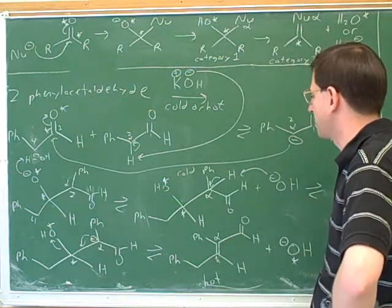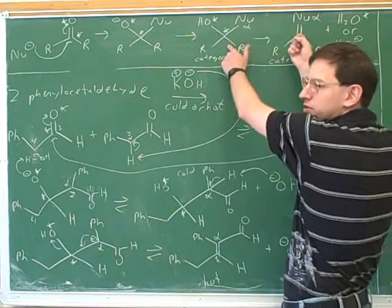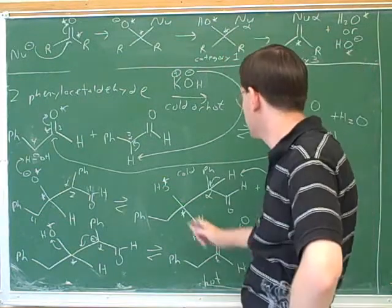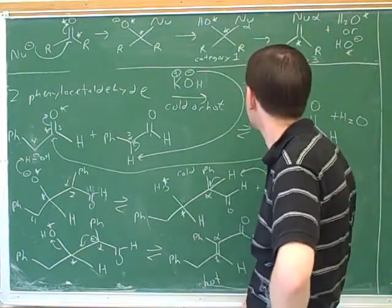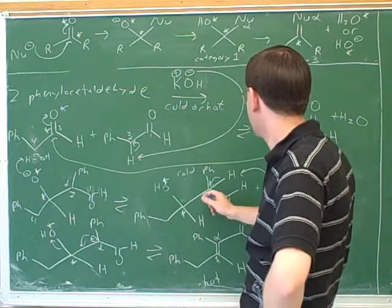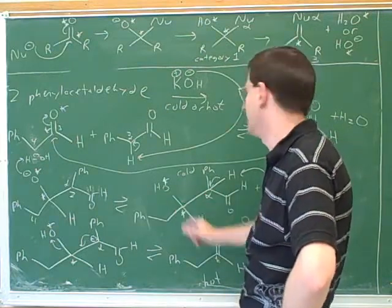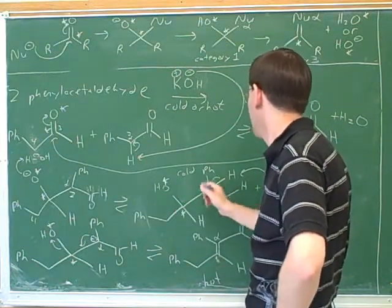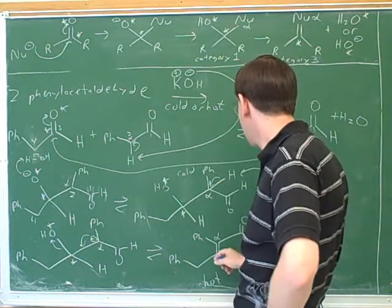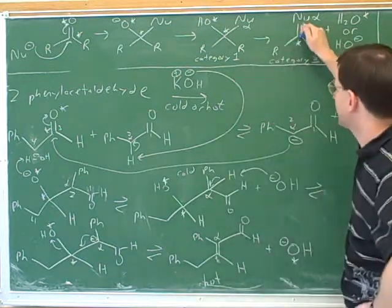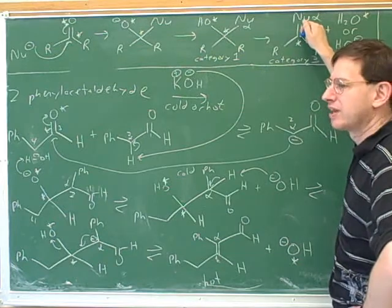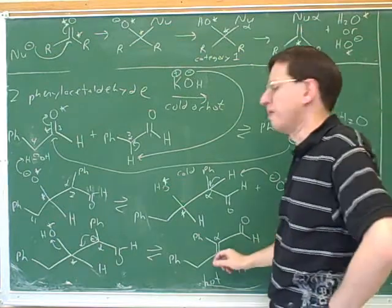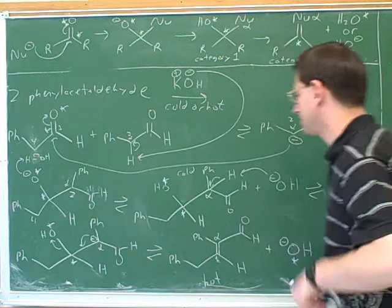So suppose you were not going to do the mechanism. How would you have drawn the product? Well you just would have used these as your pattern and you would still use the star and the alpha here, and you would simply say I'm taking this alpha carbon and having it attack the star carbon, and you want to make sure that you don't lose any of the other bonds on the alpha carbon. And down here in category three you have to remember that the carbonyl oxygen is completely gone and the alpha carbon now has a double bond to the star carbon but it's still attached to the same things as before.